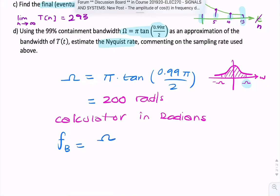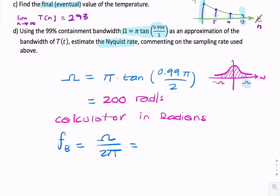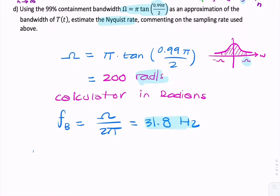So FB equals omega divided by 2 pi. So that will give you 31.8 hertz. So I've just converted units from radians per second to hertz. And the question was estimate the Nyquist rate. So the Nyquist rate is twice the highest bandwidth. And the reason it says estimate rather than calculate is because it isn't band limited. So we're estimating using the 99% containment bandwidth. So that's 63.6 hertz.